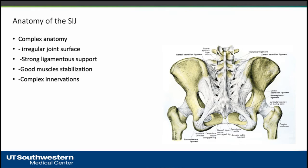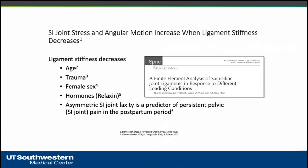The sacroiliac joint has complex anatomy — an irregular structure with very strong ligaments and strong muscles, which are very important for stabilization when standing and sitting. It also has complex innervation. Certain factors can affect the ligament and its stiffness: age, trauma, female hormones, and especially postpartum with the hormone relaxin.